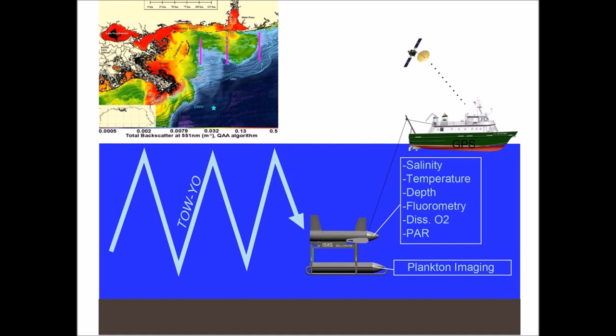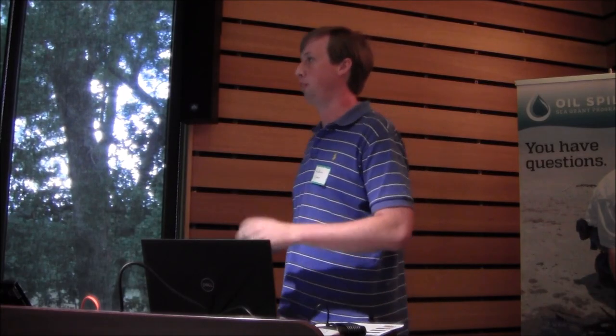We collect a lot of data — about two terabytes of images every 3.5 hours of towing. It's towed behind a ship on a tether that transmits image data along with salinity, temperature, depth, barometry, a proxy for phytoplankton abundance, and dissolved oxygen. We get this massive dataset of image files and physical data that we can merge based on a common time stamp, so we get environmental information about every image we take.